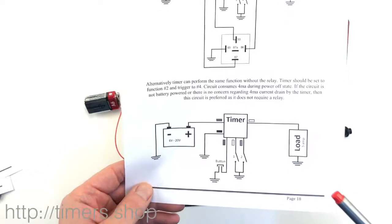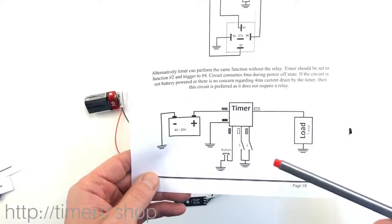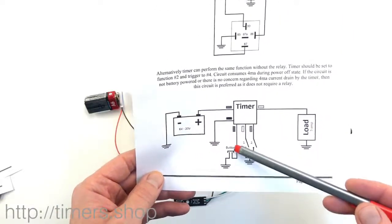Okay, in this video I would like to show you a different self-latching circuit. It only contains a button connected to the trigger wire.